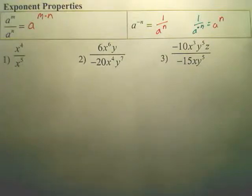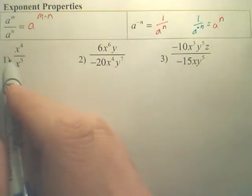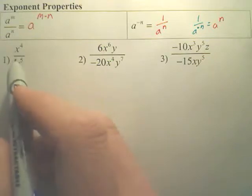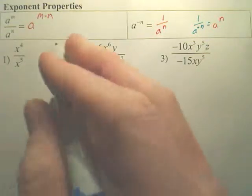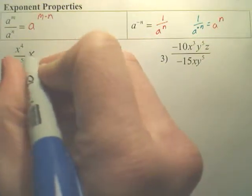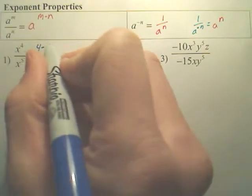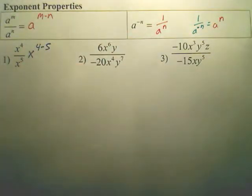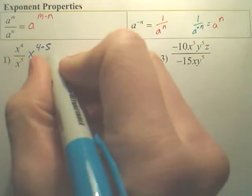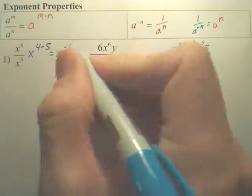So let's look at number 1 here. The simple rule is basically saying to subtract these two numbers. So this is going to be x to the 4 minus 5, which would be x to the negative first.